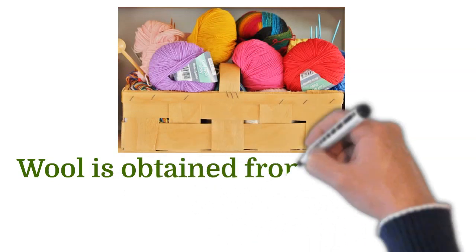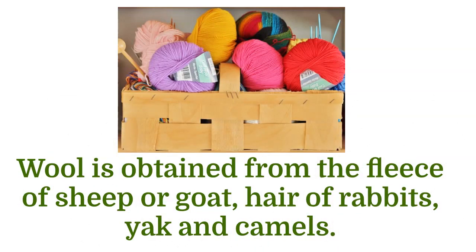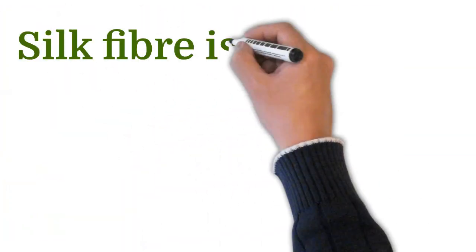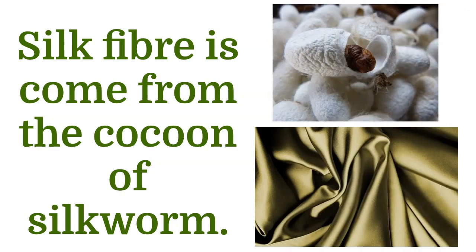Wool is often from the fleece of sheep or goat, hair of rabbits, yak and camels. Silk fiber is come from the cocoon of silkworm.